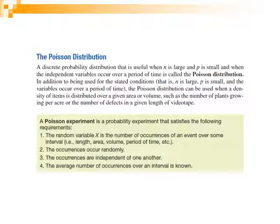Now, how do we know if a problem is a Poisson distribution? The Poisson distribution experiment should satisfy the following four requirements. Number one: the random variable X is the number of occurrences of an event over some interval — like length, area, volume, or period of time. Number two: the occurrences are random. Number three: the occurrences are independent — the variables do not depend on each other. Number four: the average number of occurrences over an interval is known. If you have these requirements, you are in a Poisson experiment.